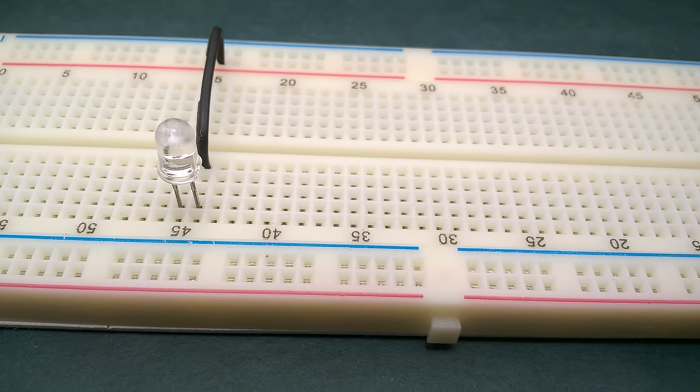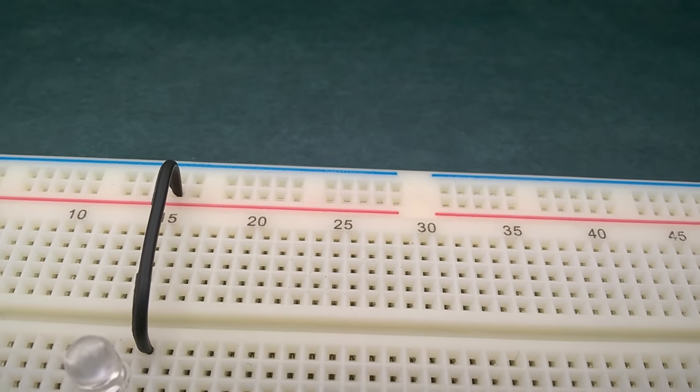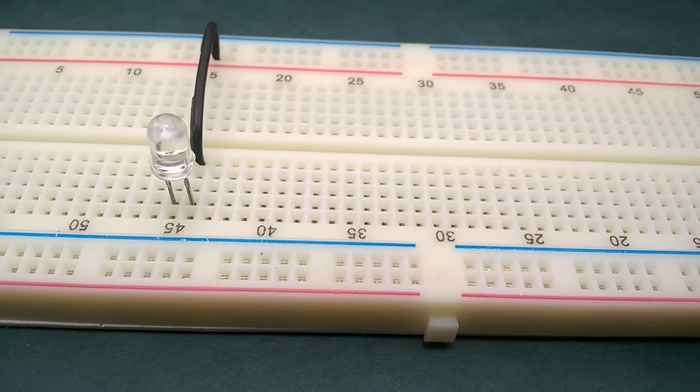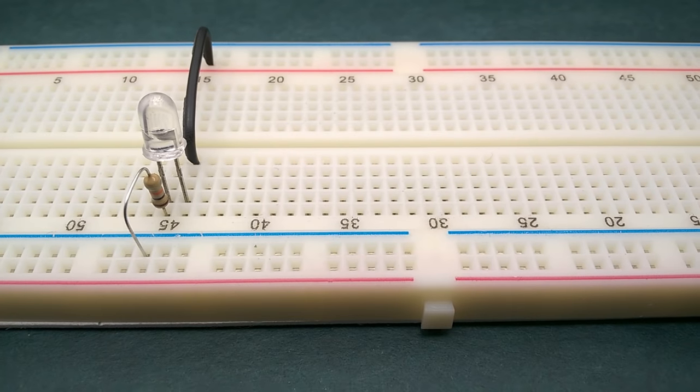Connect negative terminal of the infrared photodiode to positive rail like we connect batteries in series negative to positive and its positive terminal to the negative rail via a 10k resistor.